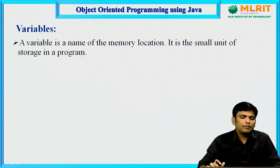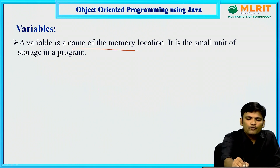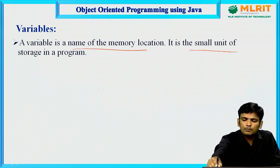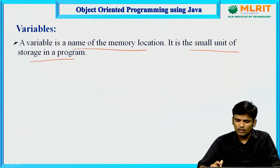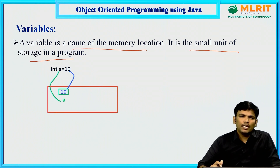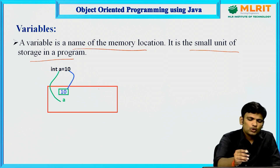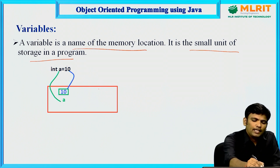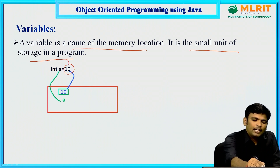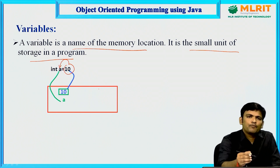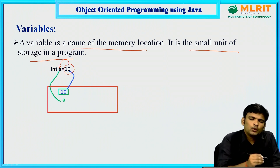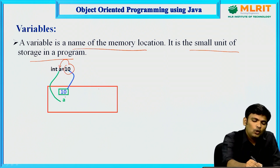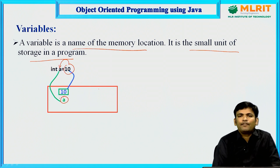What is a variable? A variable is nothing but the name of a memory location — it is a small unit of storage in a program. Whenever you declare any variable in a program, suppose I declare int a equals to 10, then internally a space will be allocated and the value 10 will be stored there. That location name is nothing but the variable.